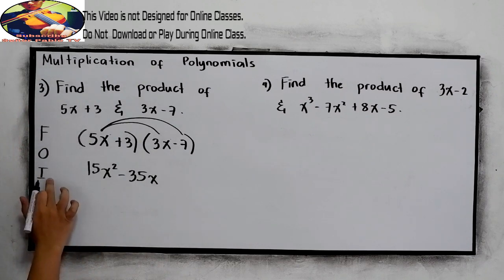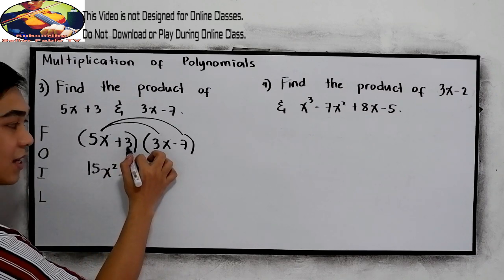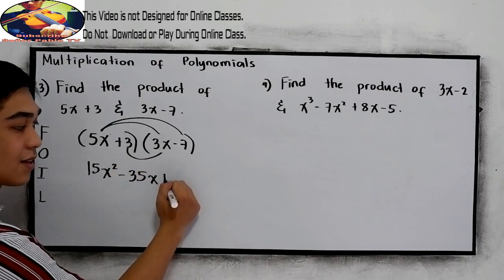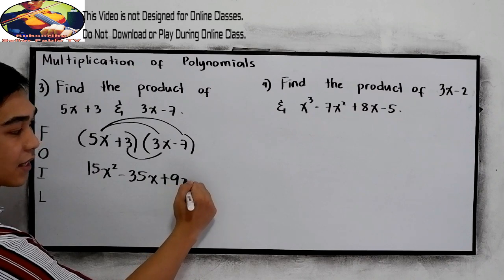Next, the inner terms. 3 times 3x. So 3 times 3, that is positive 9x.